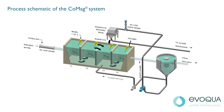This is the process schematic of the COMAG system. It comprises a series of stirred reaction tanks, which condition the water prior to it entering the clarifier, where the solids rapidly settle out to leave a very high-quality, low-turbidity treated effluent.